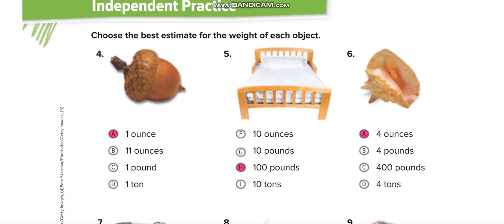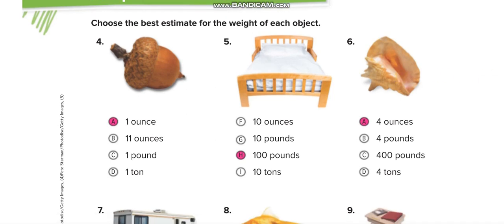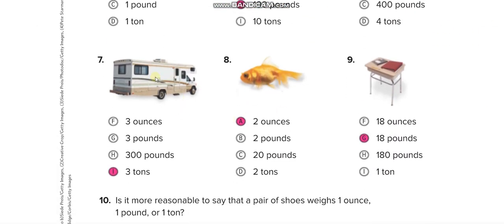I don't know what this is—a nut or something like that—so the reasonable one is one ounce. This bed, you can say a hundred pounds. This thing, four ounces—it's a large thing. This container or bus, almost three tons. This goldfish, two ounces. This desk, 18 pounds.